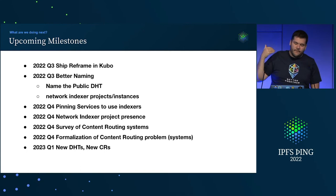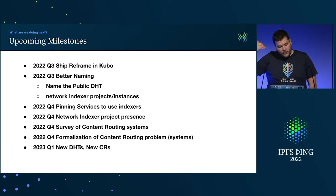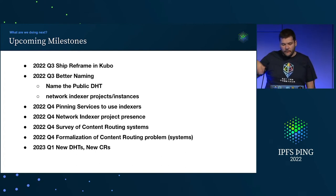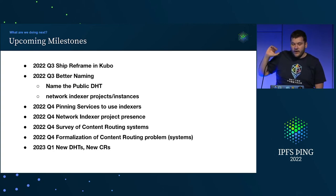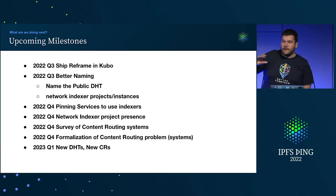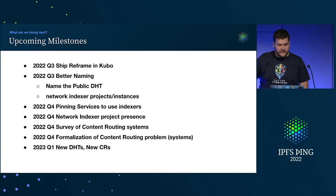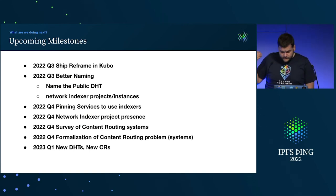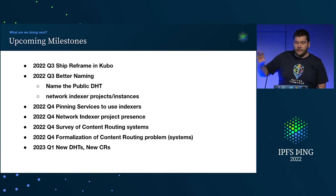We need to improve a bunch of the naming here — name the public DHT, name the network indexer projects and instances, and just help de-confuse some of that naming. We need to articulate better why indexers are useful to pinning services and figure out what indexers need to do in order to get adopted by pinning services — make sure there's a really strong value prop there and get feedback along the way. And we need to improve the network indexer product presence.